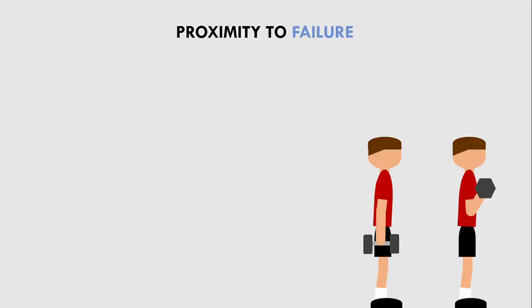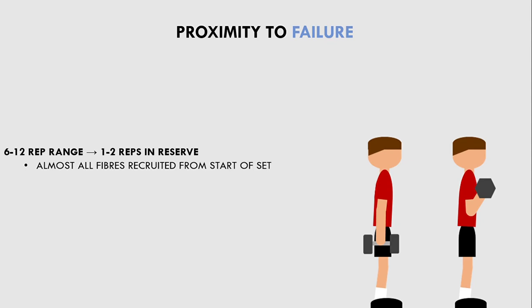This has an influence on how close we take each set to failure. When lifting in the lower hypertrophy rep ranges, we probably don't need to take each set to failure to maximize motor unit recruitment. Practically, this means that when we lift in the 6 to 12 rep range, we probably only need to lift around 1 to 2 reps before failure to maximize hypertrophy adaptations.